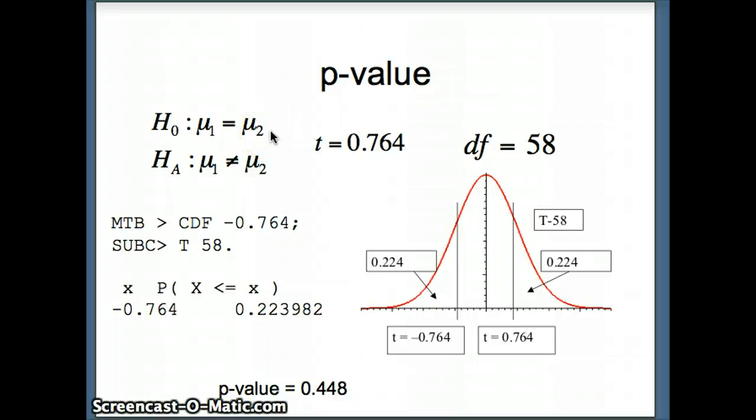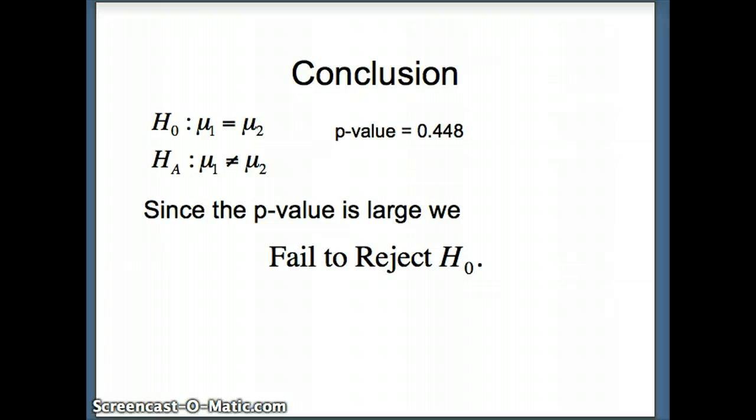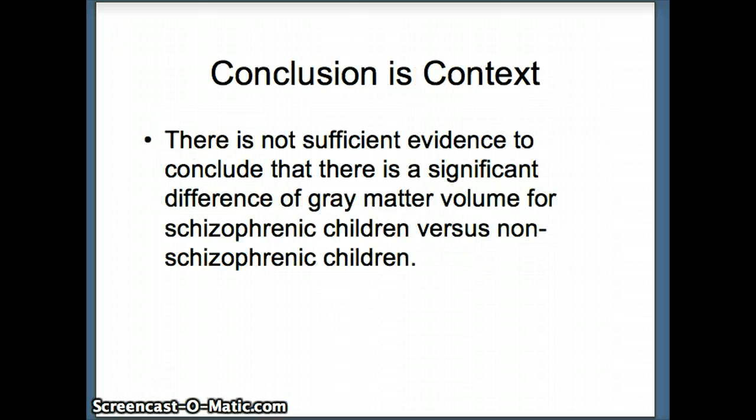Large p-value, what does that mean? Assuming H0 were true, so assuming that the schizophrenic children and the non-schizophrenic children had equal gray matter volumes, the chances of getting numbers this different just by random chance is almost 45%, and that seems fairly likely, which means there's a reasonable chance H0 is true. Since the p-value is large, we say fail to reject H0. In context, there is not sufficient evidence to conclude that there is a significant difference of gray matter volume for schizophrenic children versus non-schizophrenic children.